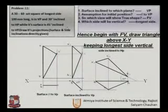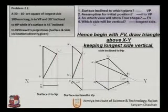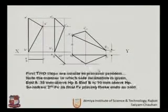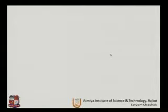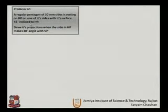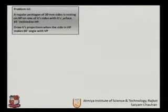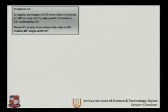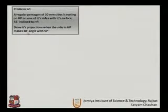We have learned how to extract the information from a given problem and how to draw specified conditions. Let us move to the next problem — Problem 12. A regular pentagon of 30 mm side is resting on the HP on one of its sides, with its surface 45 degrees inclined to the horizontal plane. Draw its projection when the side in the HP makes 30 degrees angle with the vertical plane.